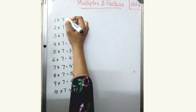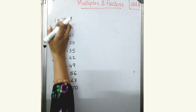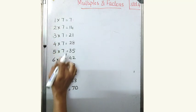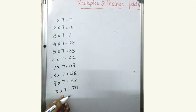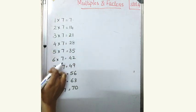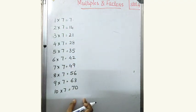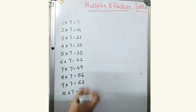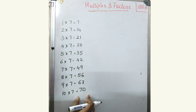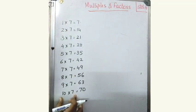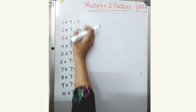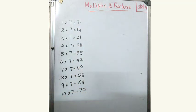Look at this part. These are the factors. This 7 is the common factor. When 7 is multiplied with some other numbers, we get the multiples. Do you get the idea about multiples? The product part is called multiples. These are the factors. Never get confused — the product is called the multiple and these are the factors.